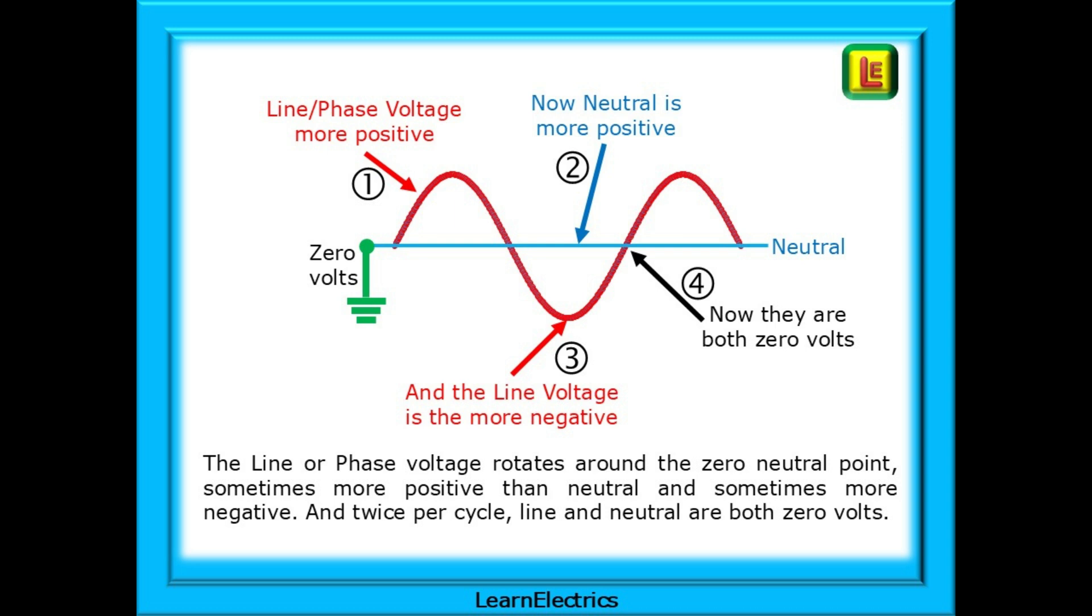The line or phase voltage fluctuates around the fixed zero neutral point. Sometimes, the line is more positive than the neutral and sometimes more negative with the neutral being more positive than the now negative line voltage. And twice per cycle, line and neutral are both zero volts. So neutral never changes. It's the line voltage that does all the changing.